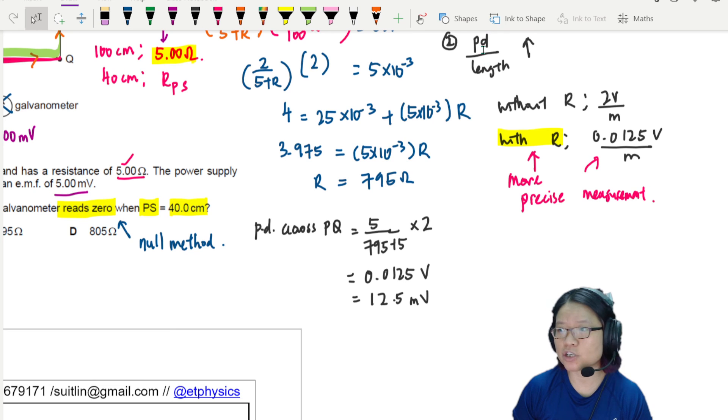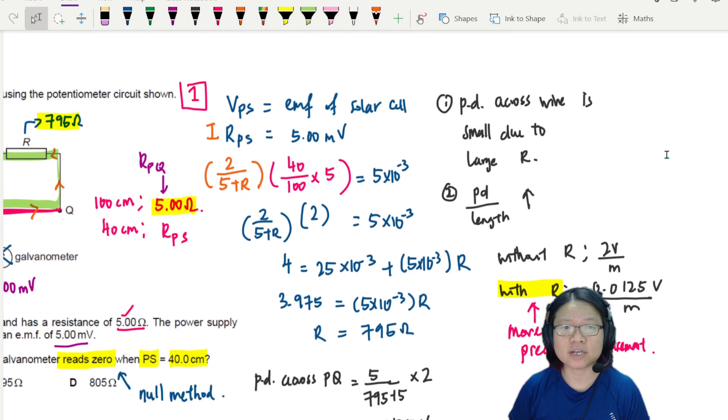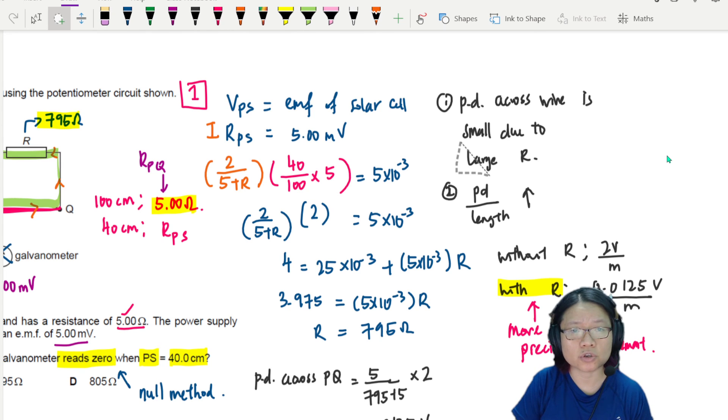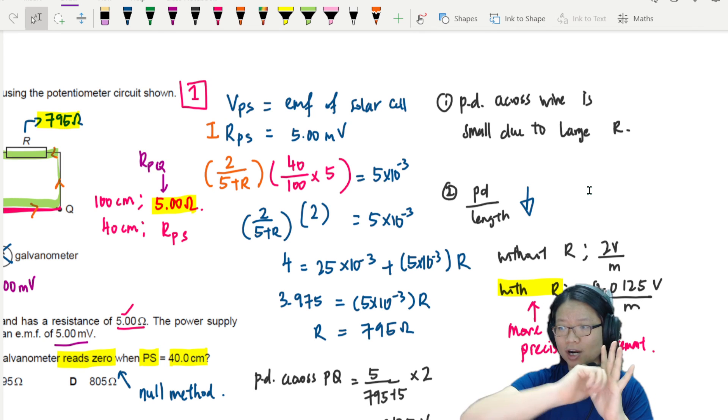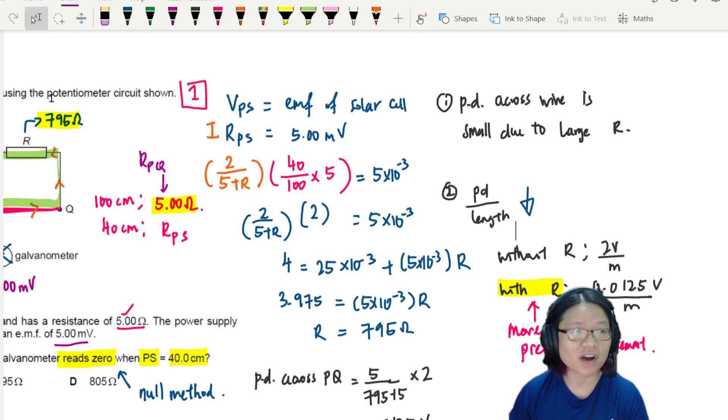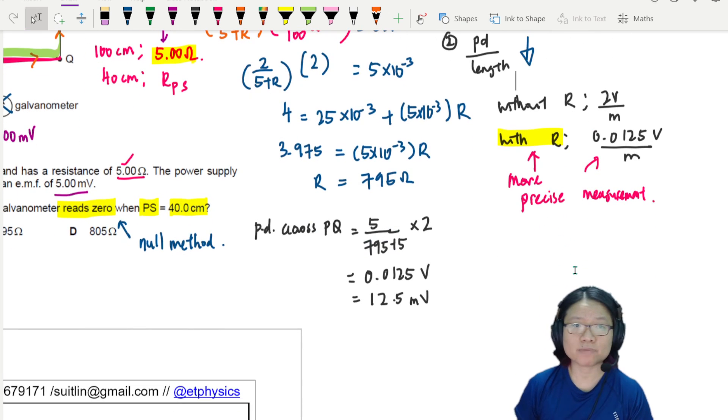Without R, the potential difference per unit length is 2 volts per meter. With R, the potential difference per unit length is 0.0125. So the entire one meter, you can spread out 0.0125. More precise. So in a nutshell, the potential difference across the wire is small due to the large R. And because of this, the potential difference per unit length of the wire decreases. So the benefit of using a potentiometer - and actually in a lot of your multimeters, there is a potentiometer inside. Whenever you go click, click, click, you turn, you could be changing the value of R. The larger the R, the more sensitive your equipment, the more precise your measurement is, the more decimal points you have. So that would be the closing thought.